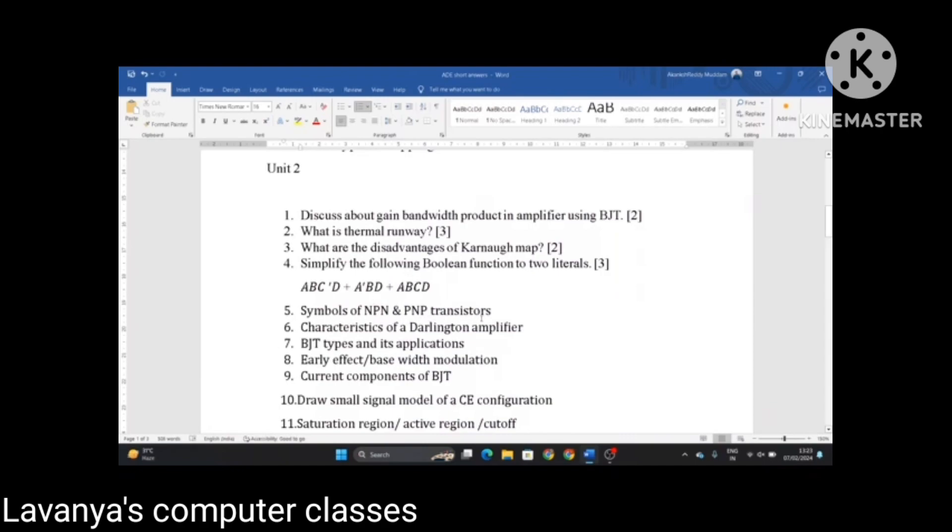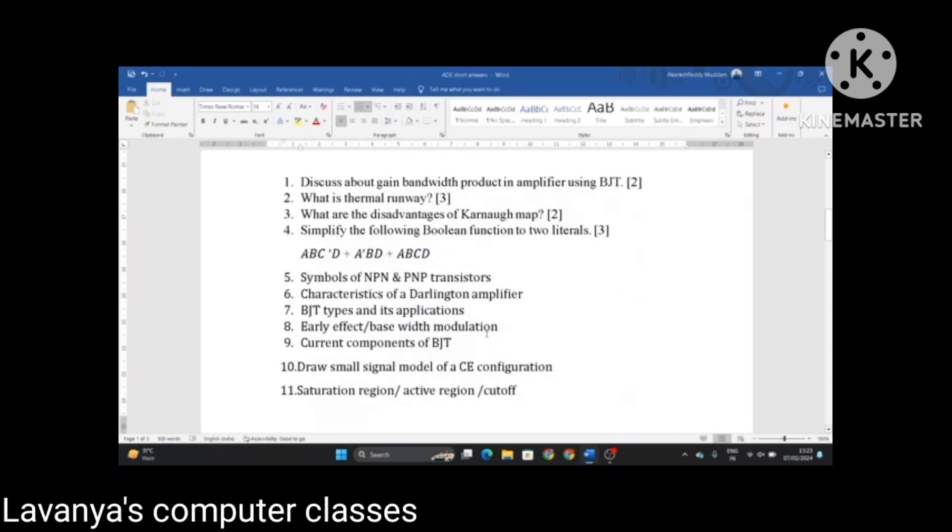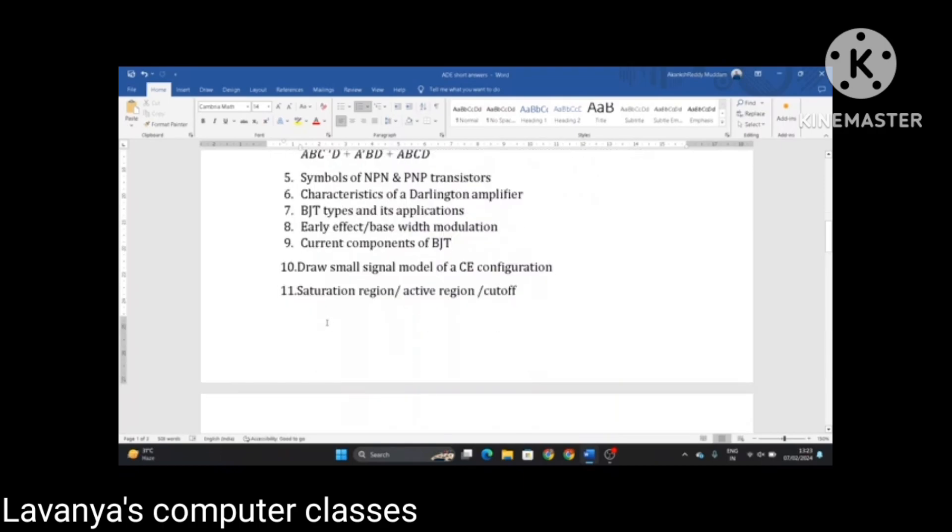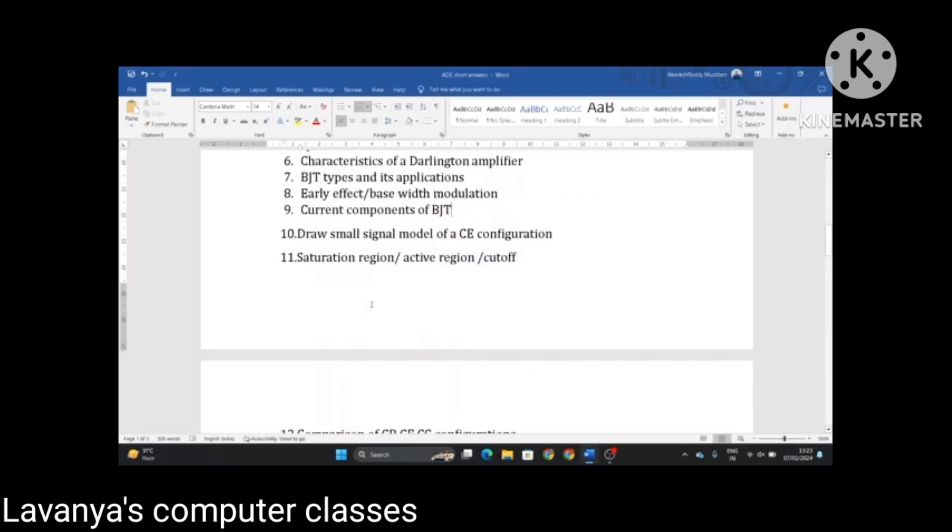Symbols of NPN and PNP transistors, characteristics of a Darlington amplifier, what is BJT types and its applications, early effect and base width modulation, current components of BJT, draw small signal model of a CE configuration, different types of saturation region.